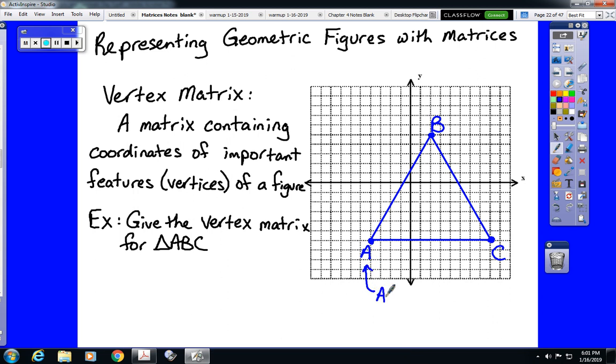We come up with the coordinates of those points. For instance, point A is located at negative 4, negative 6, left 4 and down 6 from the origin. Point B is located at 2, 5, right 2 and up 5 from the origin.